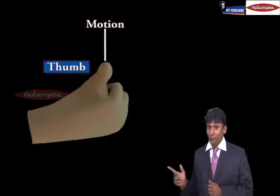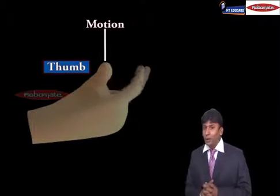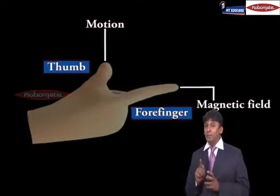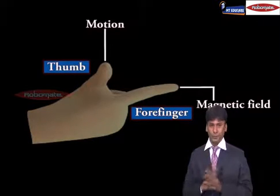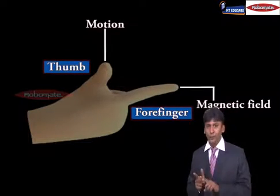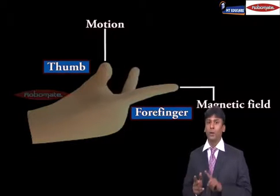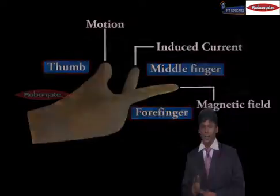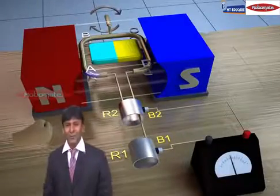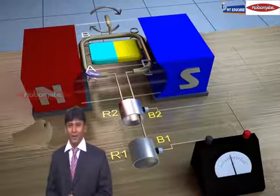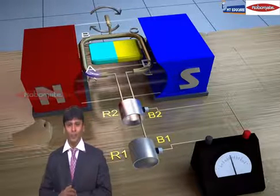Now how do we understand in which direction the current is being induced? The direction of the induced current is given by Fleming's right hand rule which we learnt. So according to this rule if the thumb shows the direction of motion, the forefinger shows the direction of magnetic field then the central finger will show the direction of the induced current.